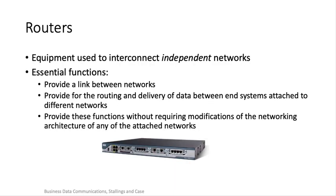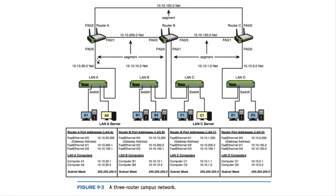A router sits on different networks. When I say different networks, I'm thinking in terms of a local area network with a particular address scheme like 192.168.1.something, versus another one at 192.168.3.something or 192.168.5.something — those represent completely different networks, each with maybe several hundred devices. A router bridges independent or separate networks that have different addressing schemes. We can see that on the top side of router A it's connected to 10.10.100.0, another network at 10.10.200.0, and a third at 10.10.20.0.